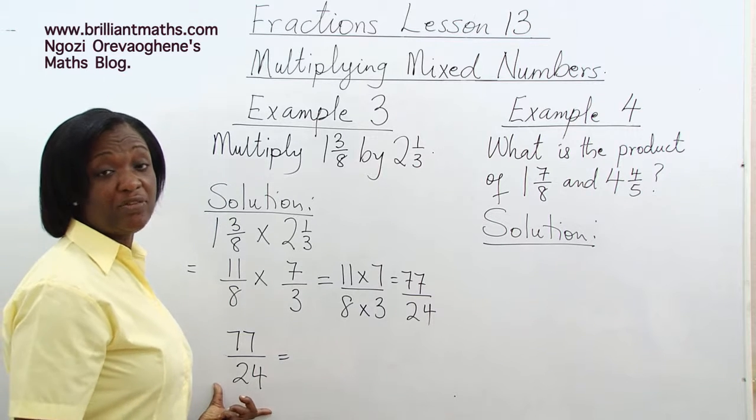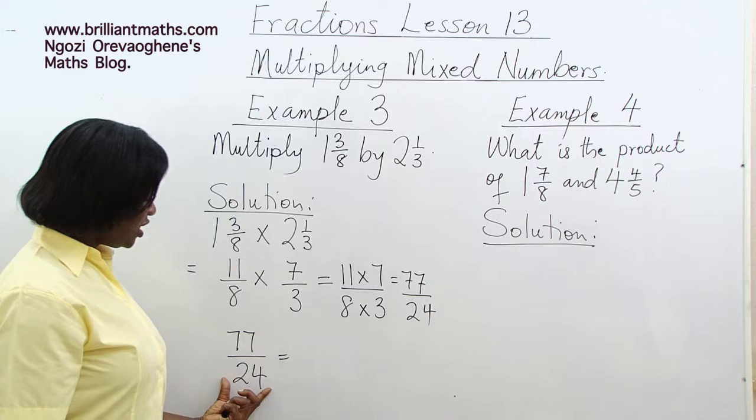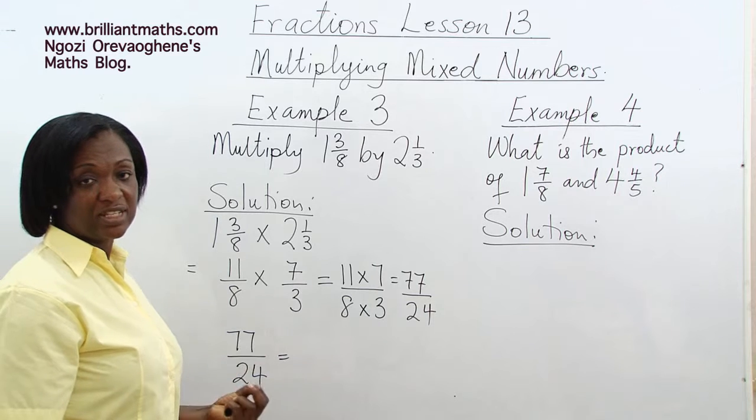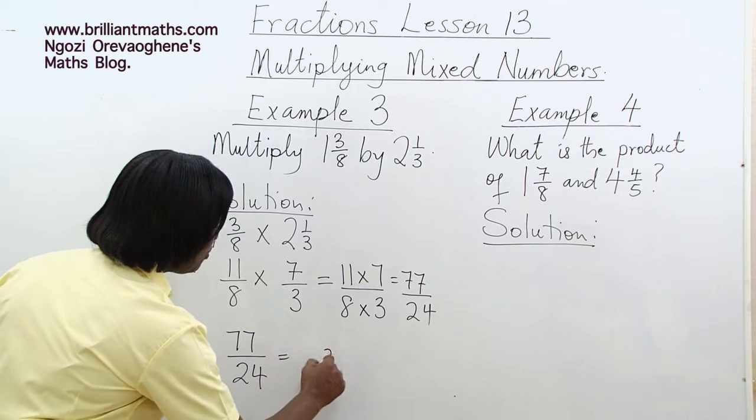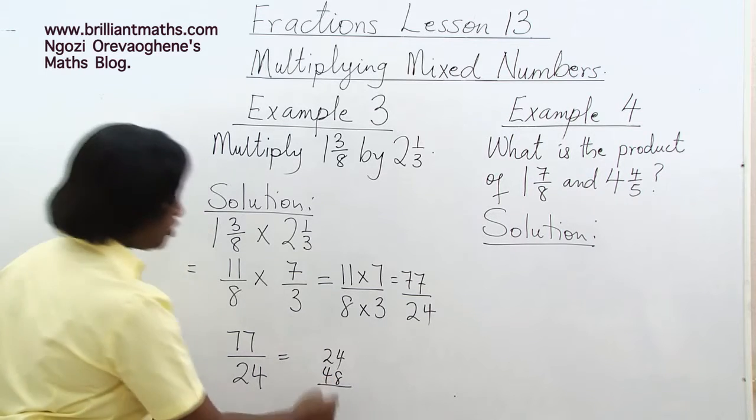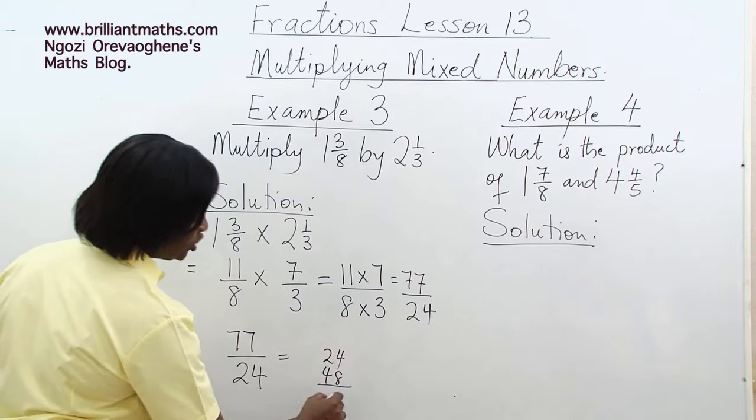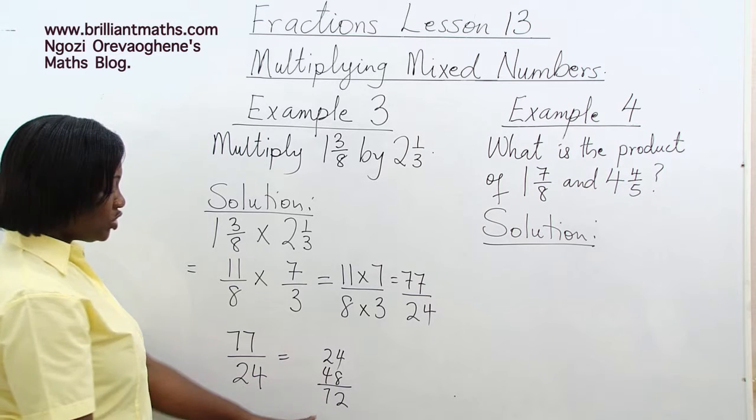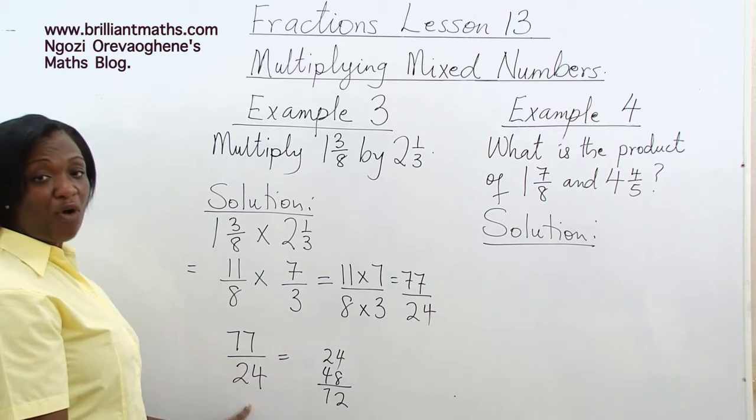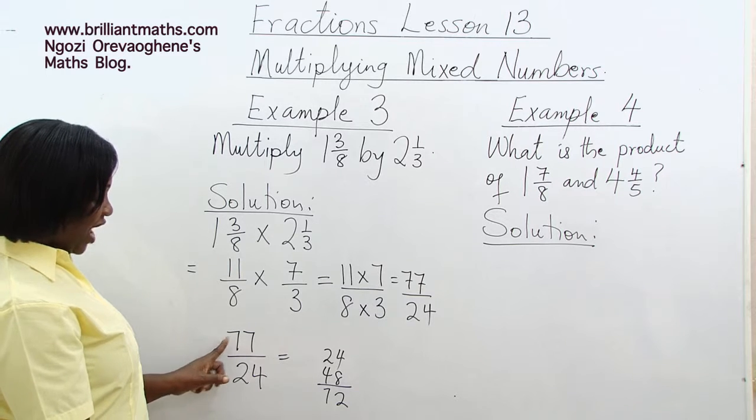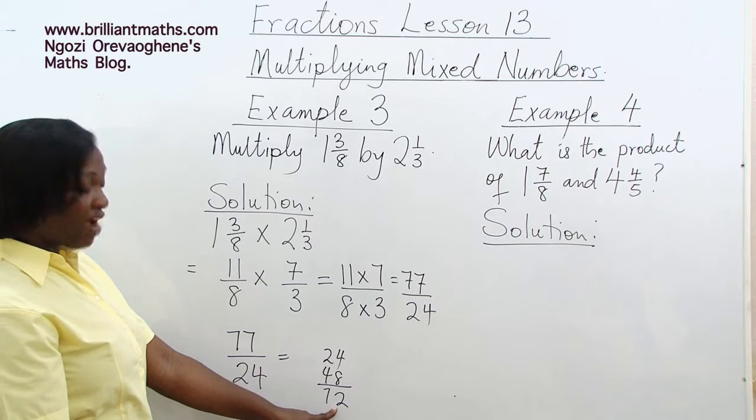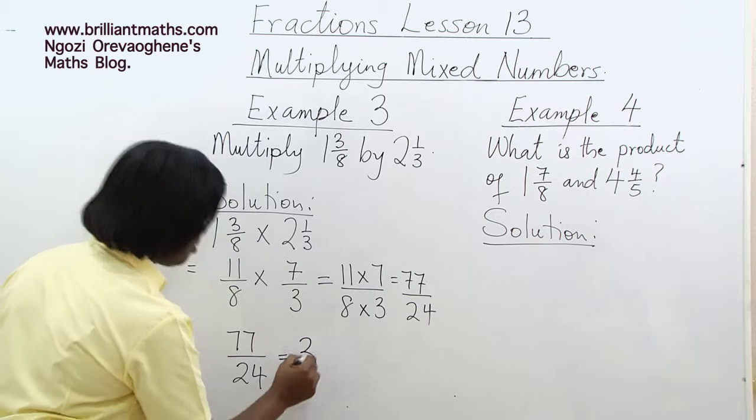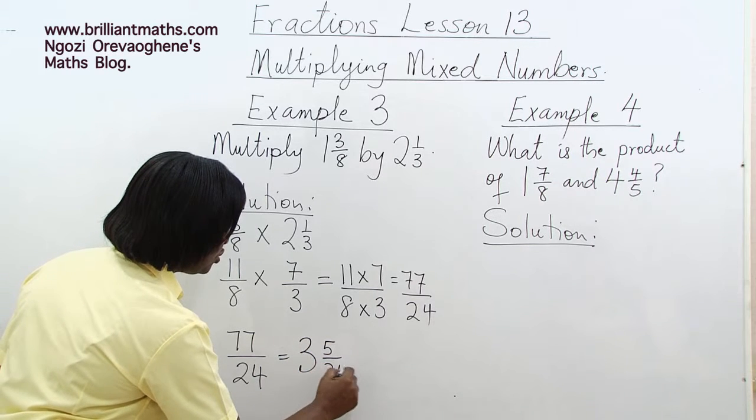Let's use our knowledge of estimation. How many 24s do you have in 77? If you add 24 twice, you get 48. If you add another 24 to 48, you get 72. So there are 3 24s in 77. And then 77 minus 72, we have 5. The answer is 3 whole number 5 over 24.